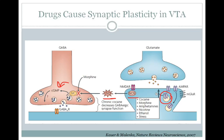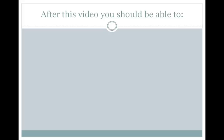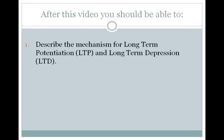This is a very complex topic that we can only scratch the surface of in this class. It is a very active area of research due to the public health implications — if we can understand how and why addiction is formed and how we can reverse it, this will obviously have great impact on the lives of many individuals who are addicted to drugs. This concludes our video on synaptic plasticity. After watching this video, you should now be able to describe the mechanism for long-term potentiation, or LTP, as well as long-term depression, or LTD.